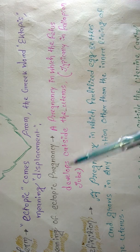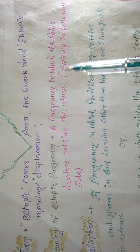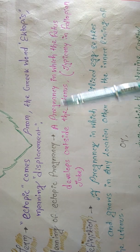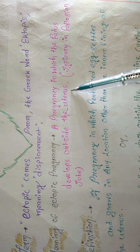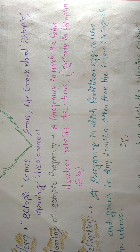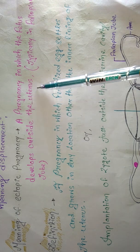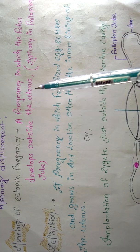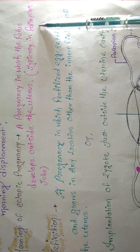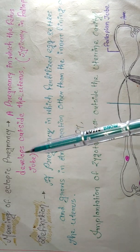Ectopic pregnancy means a pregnancy in which the fetus develops outside the uterus. The uterus is the correct and ideal place for a fetus to grow. When the fetus starts developing outside the uterus, that is a displacement. Ectopic pregnancy typically occurs in the fallopian tube, where the fetus starts growing inside the fallopian tube itself.